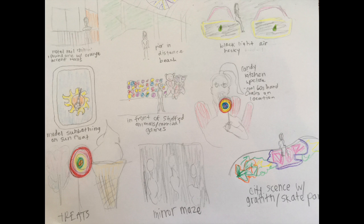I was able to capture most of the images I had sketched out — the blacklight table, sunbathing on the floor, some in front of animals, a big lollipop by those chairs, and a mirror maze picture. The only ones I wasn't able to do were the skate park and the hotel one, just because of private property. But I'll show you the images that I got.